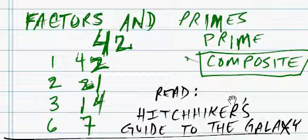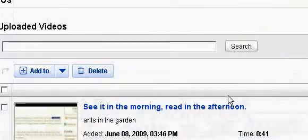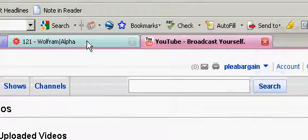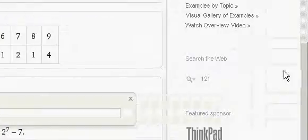And again, just to repeat, 1, 3, and 7 are prime numbers, and 6, 14, and 21 are composites. Let's take a look at lucky number 42 at Wolfram Alpha.